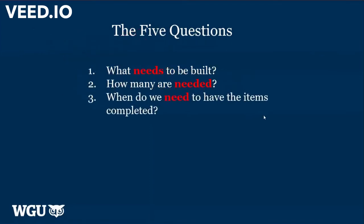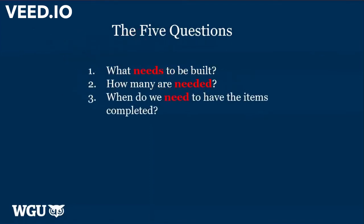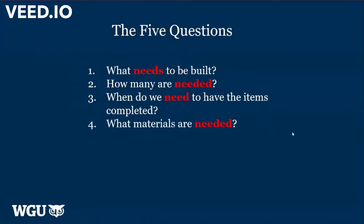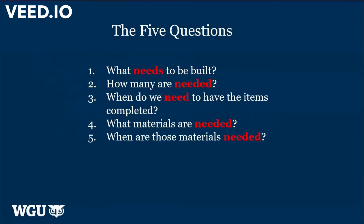The third question in MRP is: when do we need to have the items completed? Fourth question: what materials are needed? And fifth: when are those materials needed? Notice the word need, needs, and needed are highlighted to make a statement — materials needed, and we plan accordingly. MRP: required, needed.